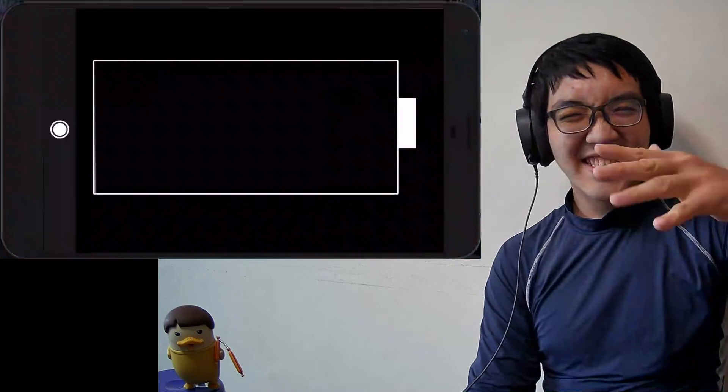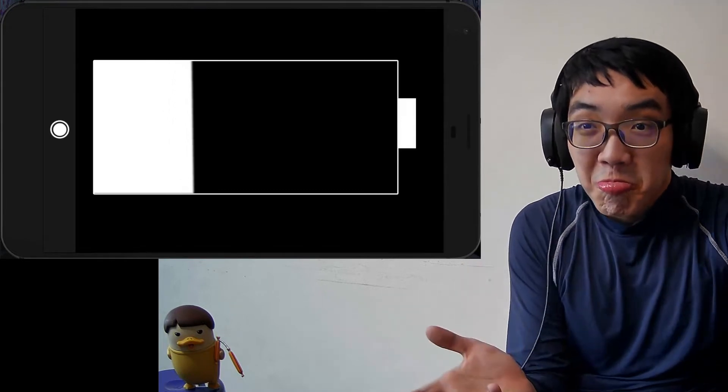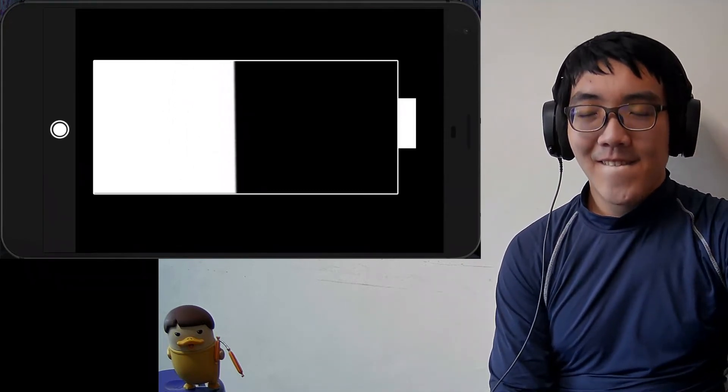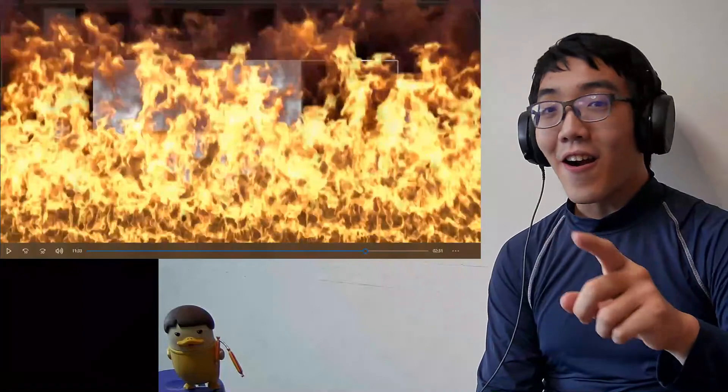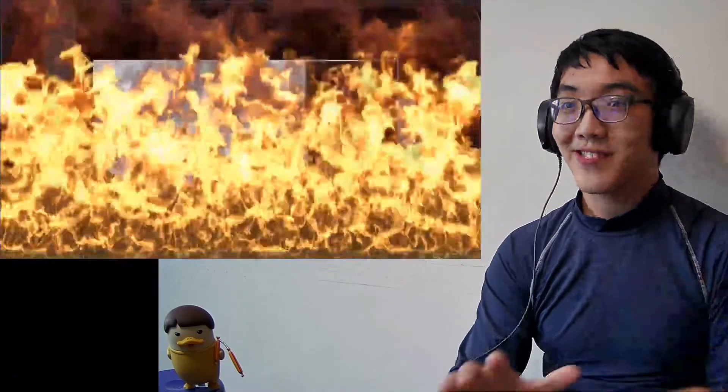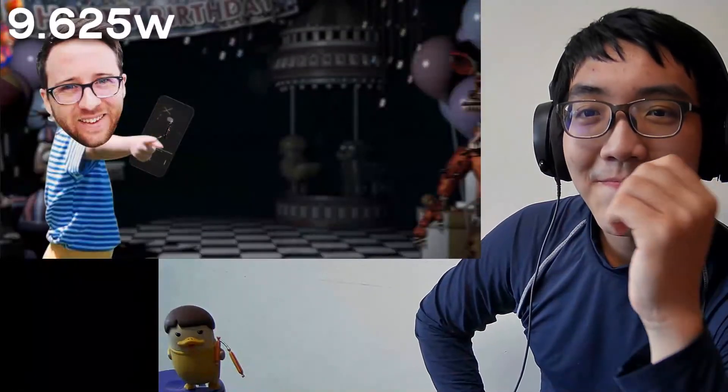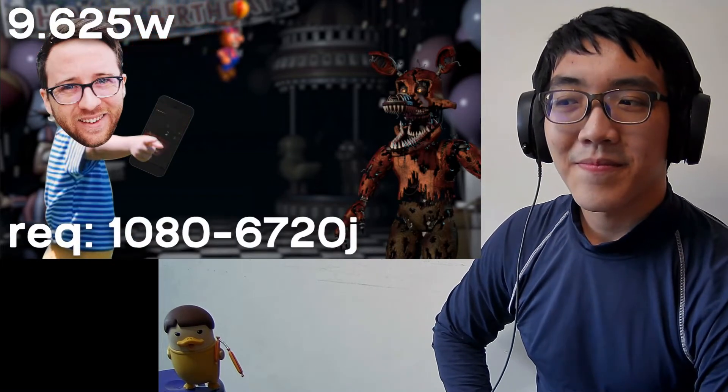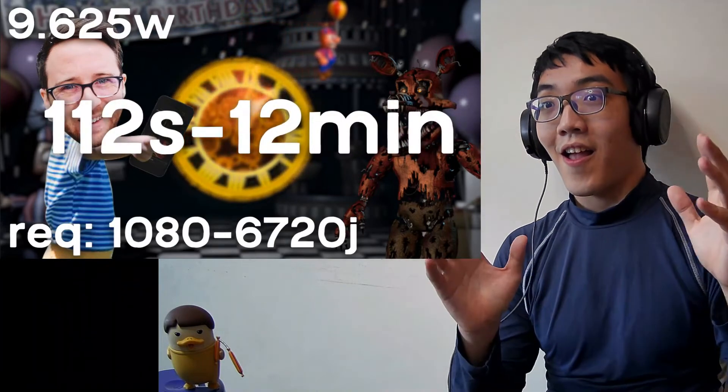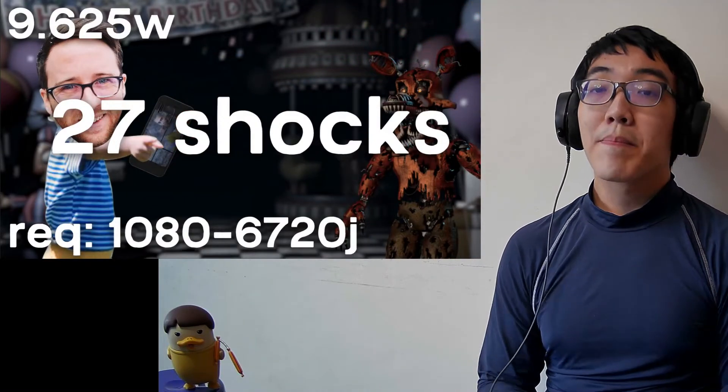Lithium ion batteries can only really draw about 2.5 amps of current tops without risking melting the wires connected to them. And this, along with volts, is our bottleneck. Because if you fry the connectors, you're never gonna be able to use your phone or its battery ever again. The max wattage of our battery, which is joules per second, or amps times volts, is 9.625 watts. At 9.625 joules per second, and our acquired joules between 1,080 and 6,720, this means it would take anywhere from 112 seconds to just shy of 12 minutes to charge our capacitors and an average of 27 shocks per fully charged battery.